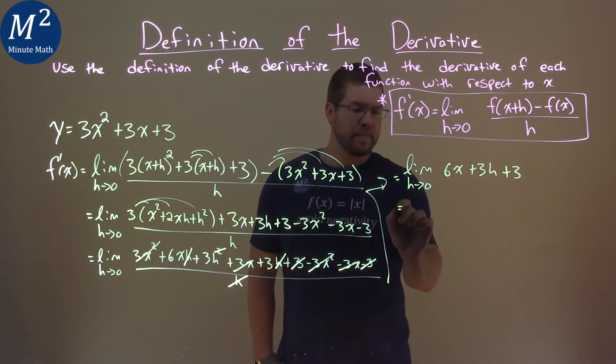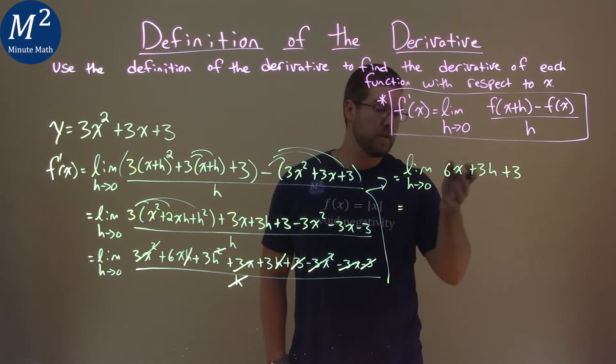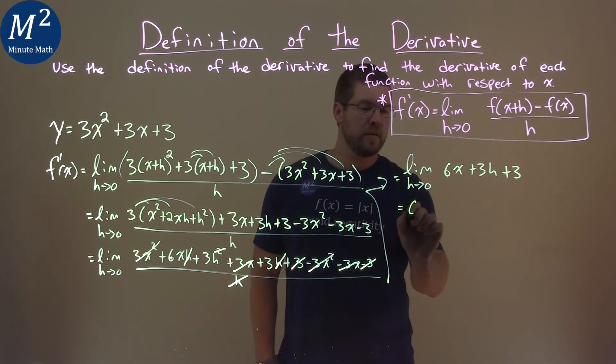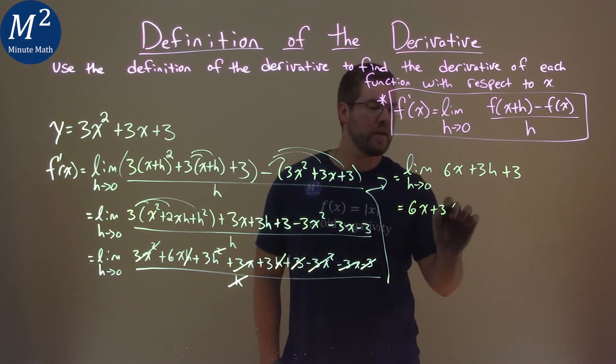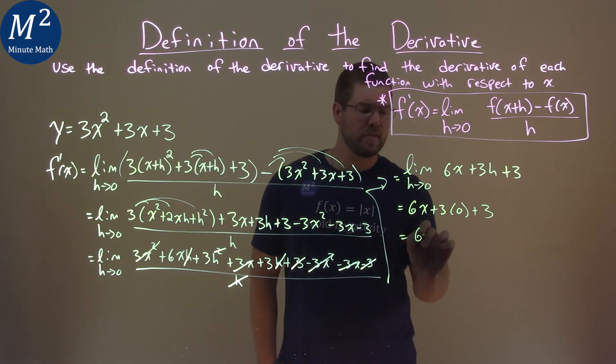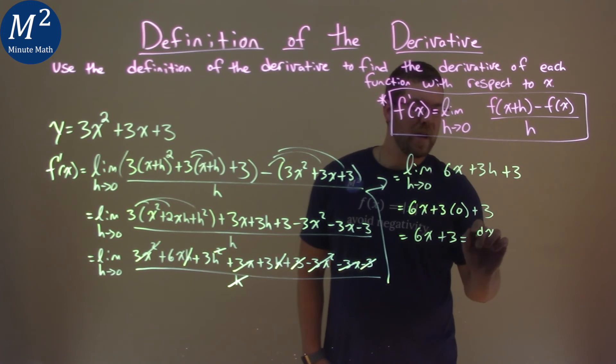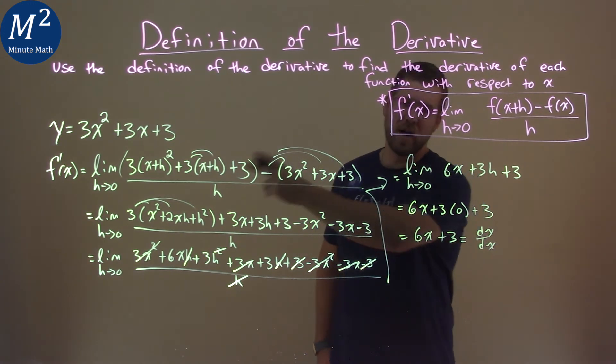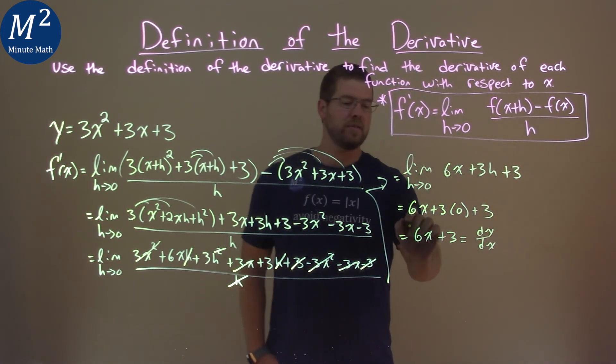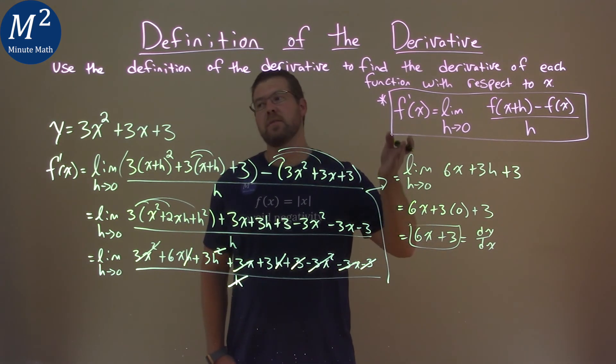So now we can take the limit. The limit as h approaches 0 for our function here—we just can plug it now directly in for h. 6x plus 3 times 0 plus 3. 3 times 0 is just 0. So we have 6x plus 3, and that is our dy/dx, that is our f prime of x, our y prime, it is our derivative. And so our final answer here is 6x plus 3.